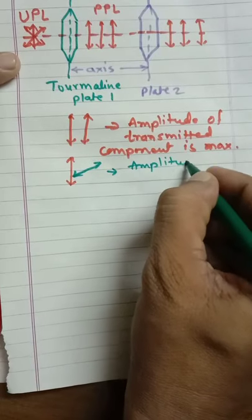On the other hand, if the angle between the axes of the two Tourmaline plates increases and it becomes 90 degrees like this, then the amplitude of the transmitted component is found to be zero.